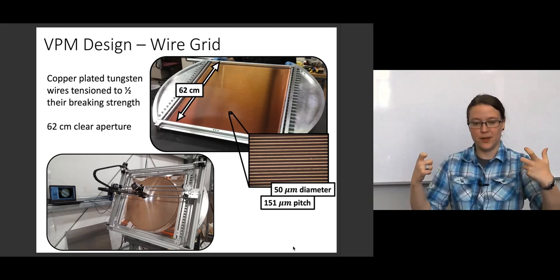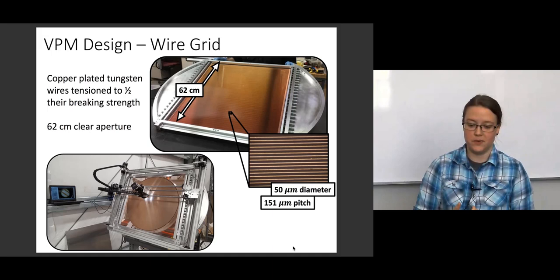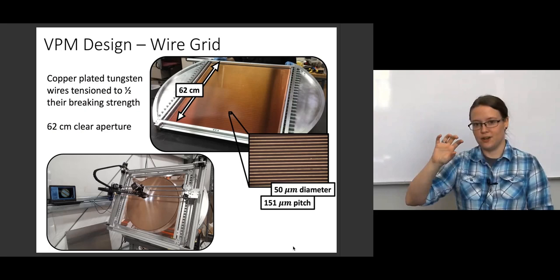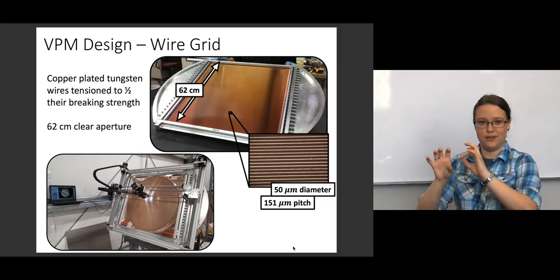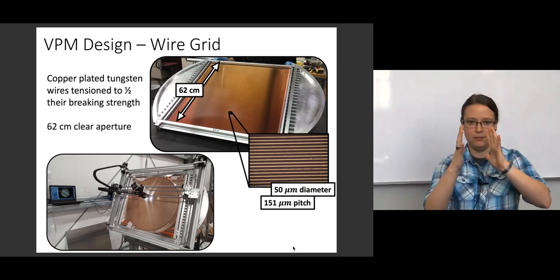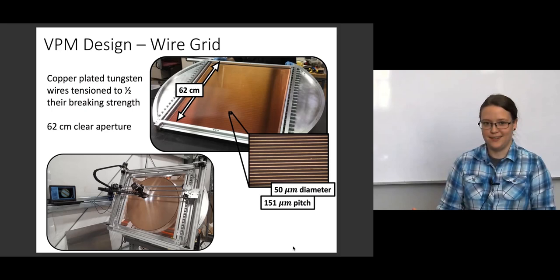And so, once you have this wire grid, you need to align it to the mirror so that everything stays nice and parallel, and we do this with this XY gantry setup that we've built here at Hopkins, where you actually take a microscope, move it across the surface of the grid, and measure the distances between the grid and the mirror back and forth at all these different places, so then you can actually figure out how they're aligned and then move the wire grid into alignment with the mirror.